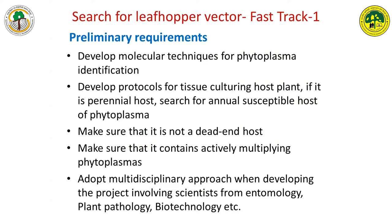Regarding how we can search for vectors — whenever you have a new outbreak of a disease, the vector could be entirely different. Here is a fast-track procedure: collect specimens from the area where the disease is present, both from diseased plants and healthy plants. Concentrate more on the leafhoppers on disease plants. You can use various methods — light traps, Malaise traps, sticky traps — some will give you live specimens. Once you have live specimens, bring them back and sort them by species. This is where a taxonomist becomes important.